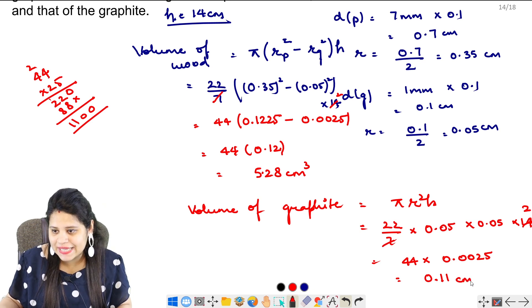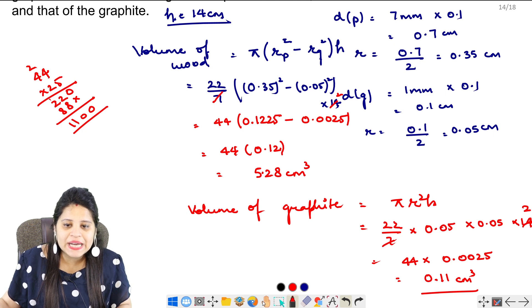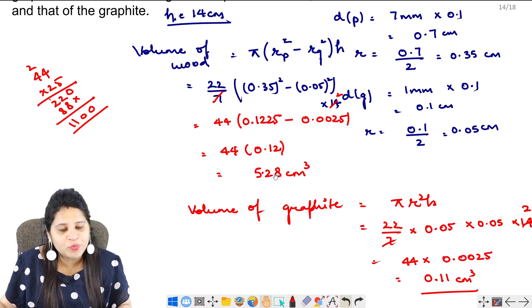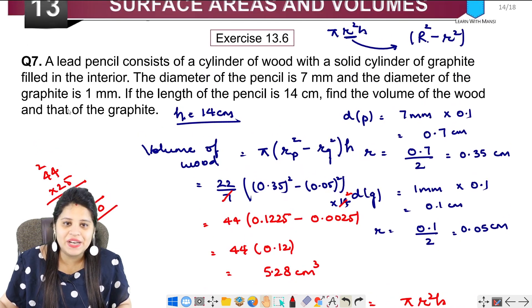We will write a centimeter cubed. This is also in volume. So we had to remove the volume of wood. It is 5.28. And volume of graphite which is 0.11. These are 2 things.